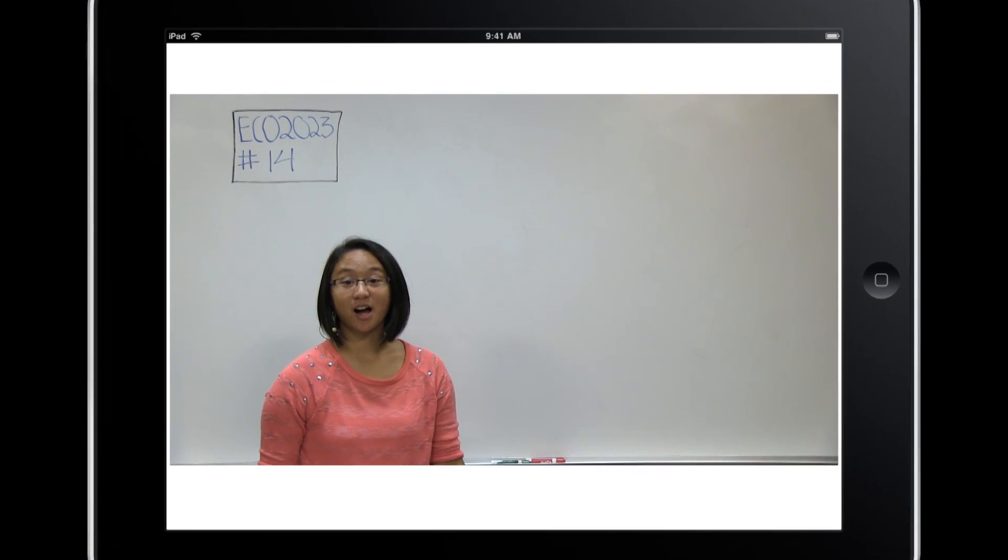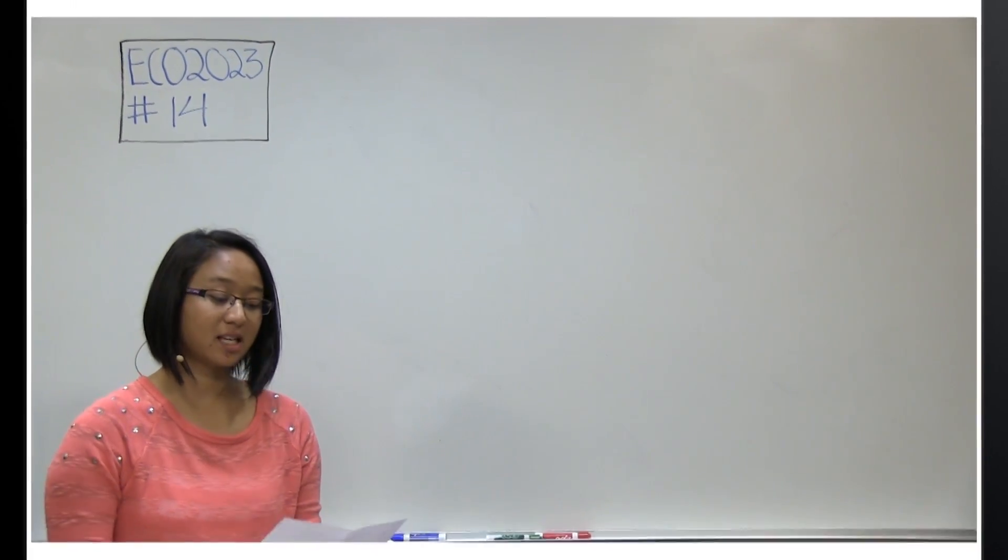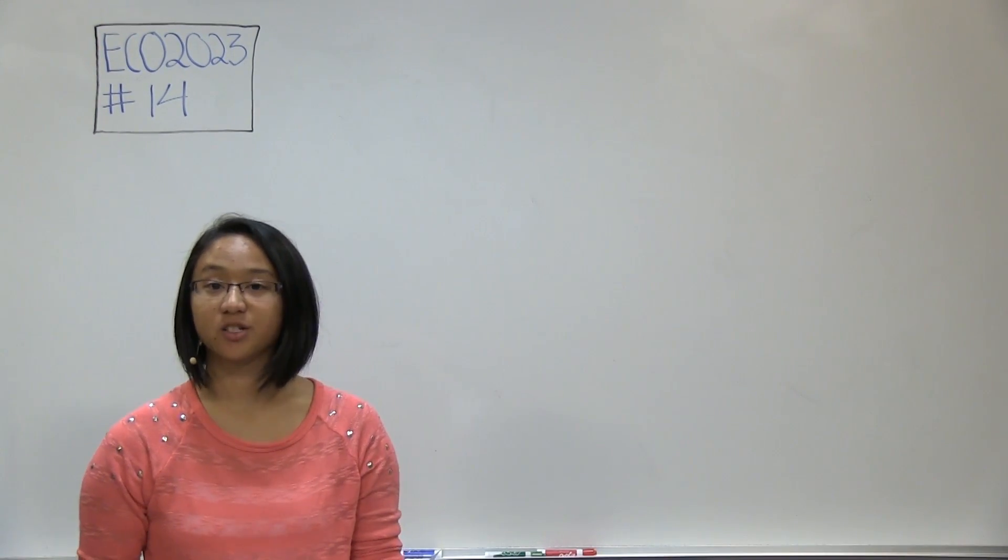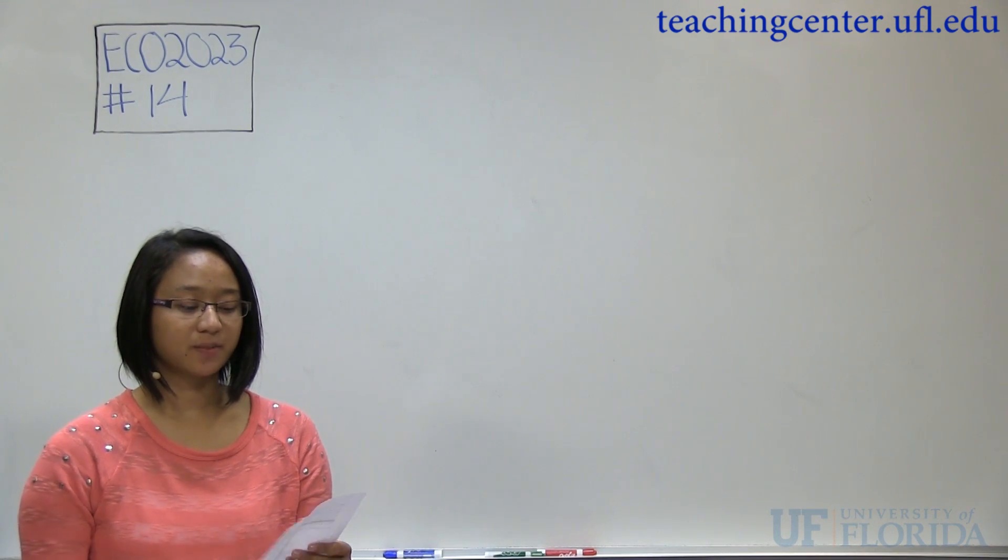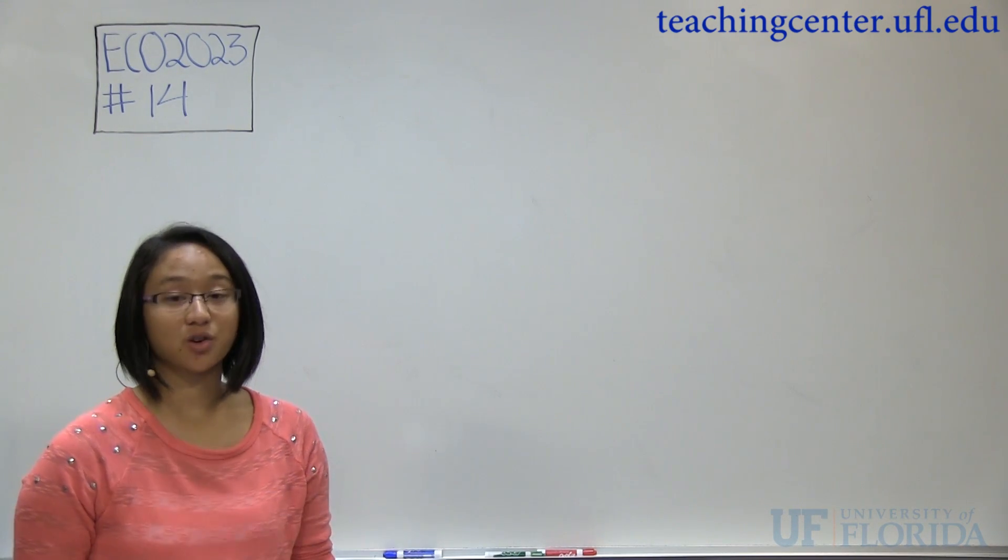Hi, in this video we're going to cover a cost question. Question number 14 reads: a firm's average variable cost is 20, its total fixed cost is 2,000, its output is 100, and it asks for what its total cost is.